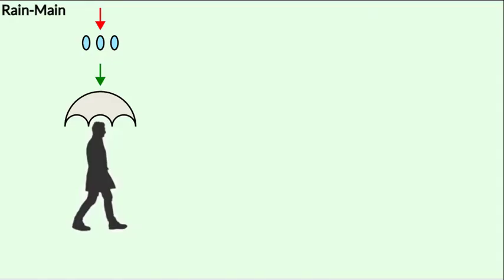We have looked at the riverboat and the plane wind problems. We move on to another similar situation known as the rain man problem. A man is stationary on the ground while it is raining. The rain falls down vertically and is denoted by the red arrow. With what orientation should the man hold his umbrella?